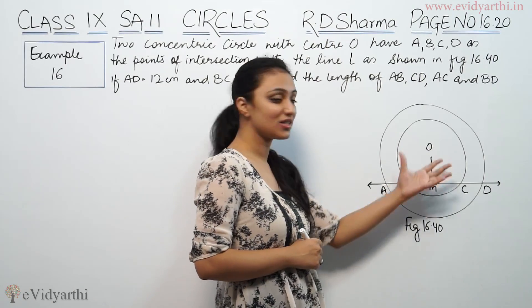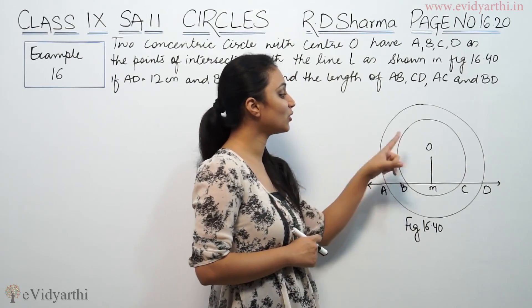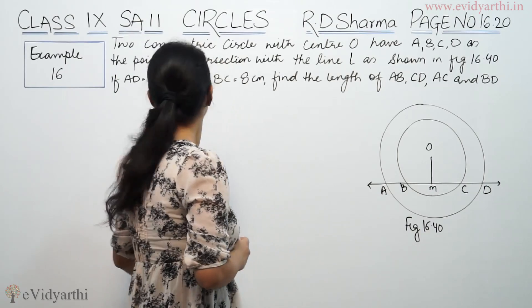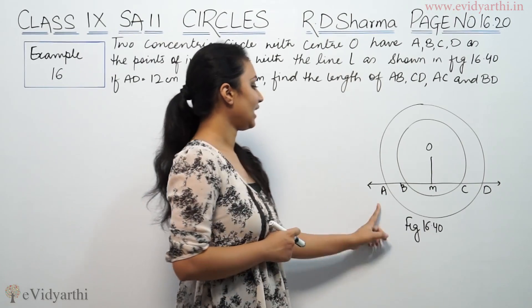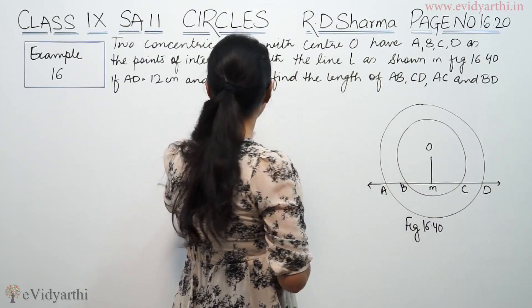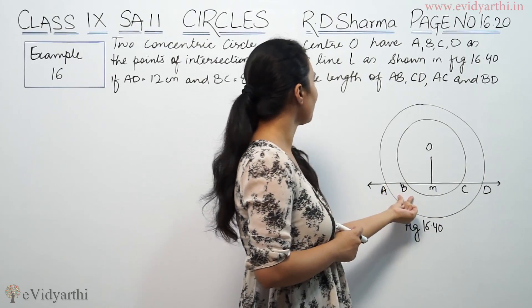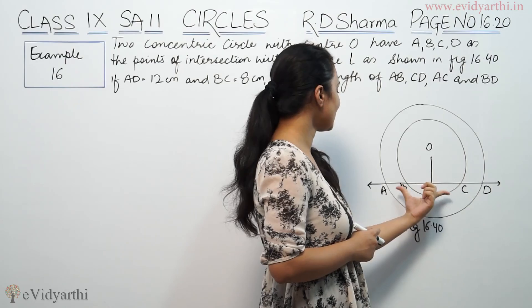So here we have shown two concentric circles. The common center, this is O, the coordinates B, C, and D. If AD is 12 cm and BC is 8 cm, find the length of AB, CD, AC, and BD.